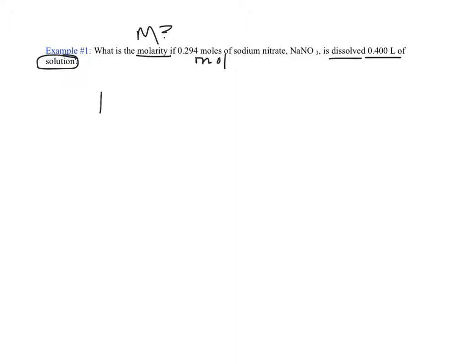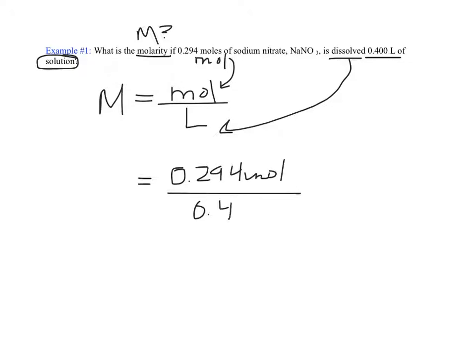Our formula today is molarity is equal to moles over liters. This one looks pretty straightforward. They've given us moles, 0.294 moles of solute, sodium nitrate, divided by 0.40 liters, or moles per liter. So we just divide these two, and we're moving on. The molarity of this solution would be 0.735, with that capital M.